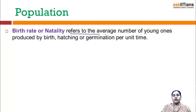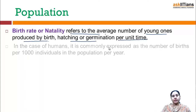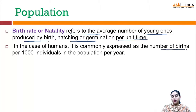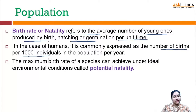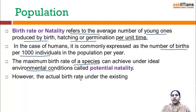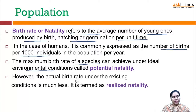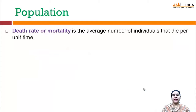First we will discuss about birth rate or natality. It refers to the average number of young ones produced by birth, hatching, or germination per unit time. In case of humans it is commonly expressed as the number of births per thousand individuals in a population per year. The maximum birth rate a species can achieve under ideal environmental conditions is known as potential natality, but the actual birth rate under existing conditions is much less and is termed realized natality.